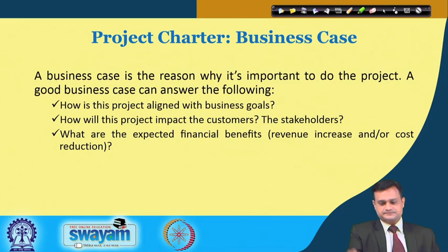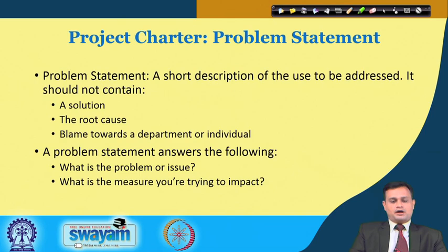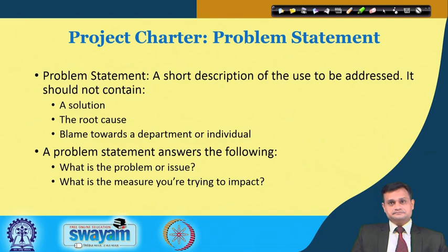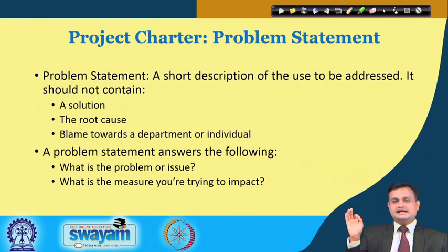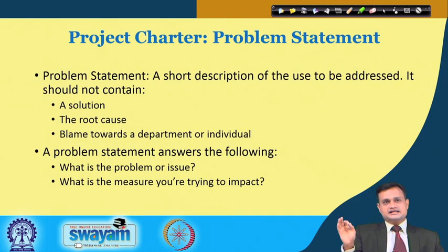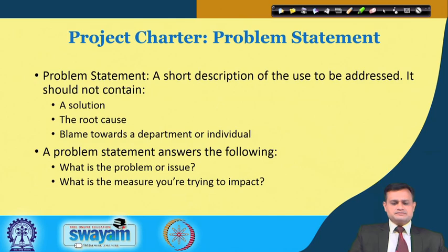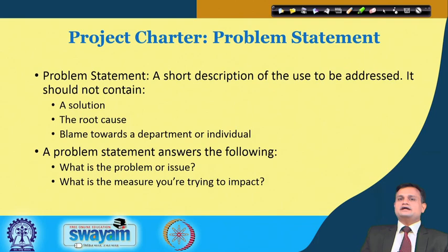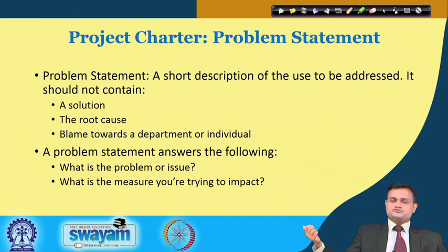The second element is the problem statement — basically a short description of the issue to be addressed. It should not contain a solution, root cause, or blame towards a department or individual. Let the problem statement only highlight the gravity of the problem; if there is any personal issue or root cause, the team will get biased. The problem statement typically answers: what is the problem under investigation, what measure are you trying to impact, and where the impact will be seen — whether in customer satisfaction, improved delivery, or customer loyalty.